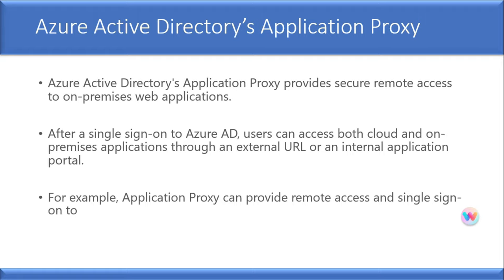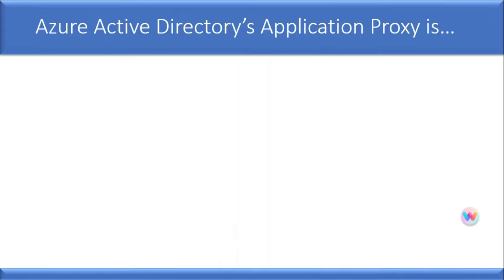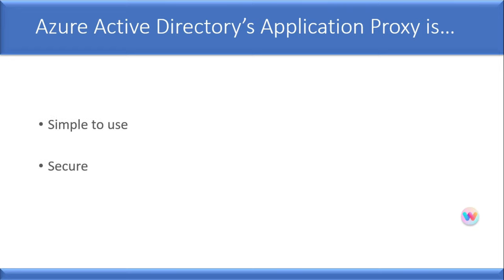For example, Application Proxy can provide remote access and single sign-on to remote desktop or SharePoint, Teams, Tableau, Qlik, or any other line of business application. Azure Active Directory's Application Proxy is really simple to use and gives you a secure way to get connected to your internal apps, and it's cost-effective too.